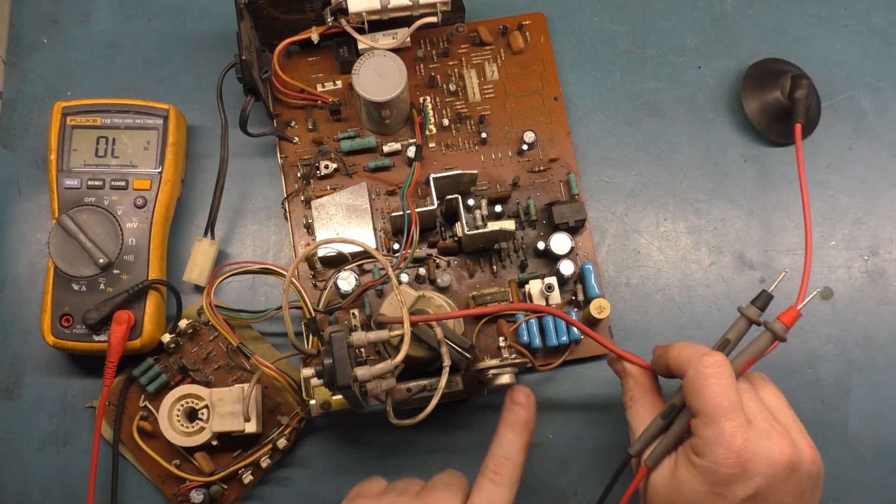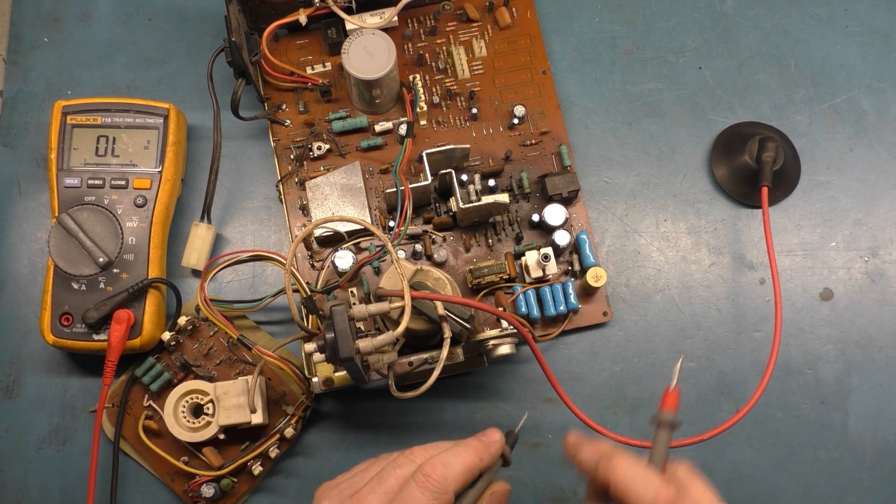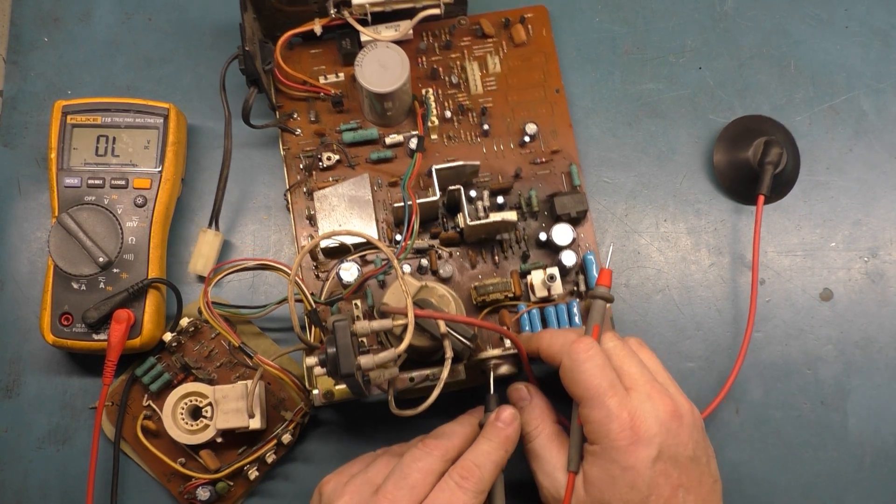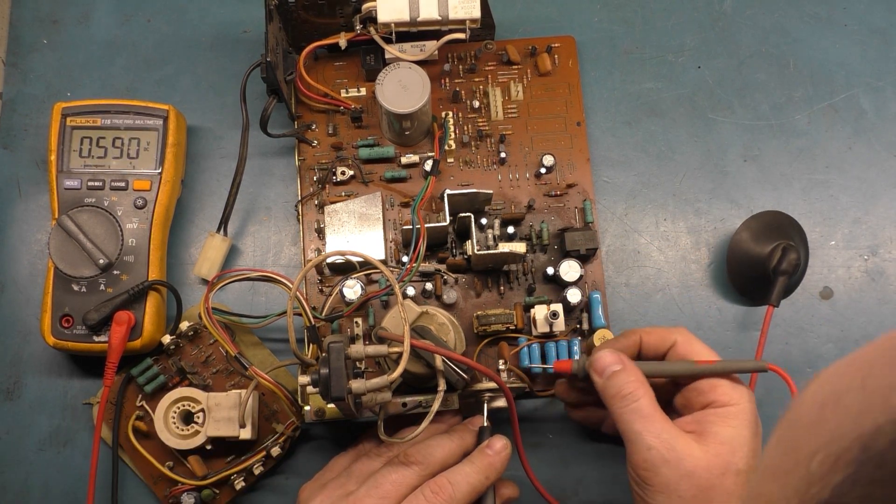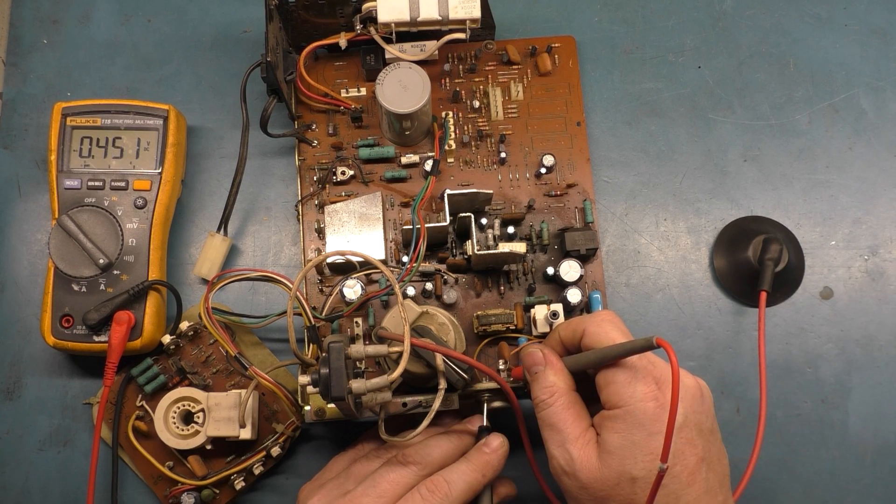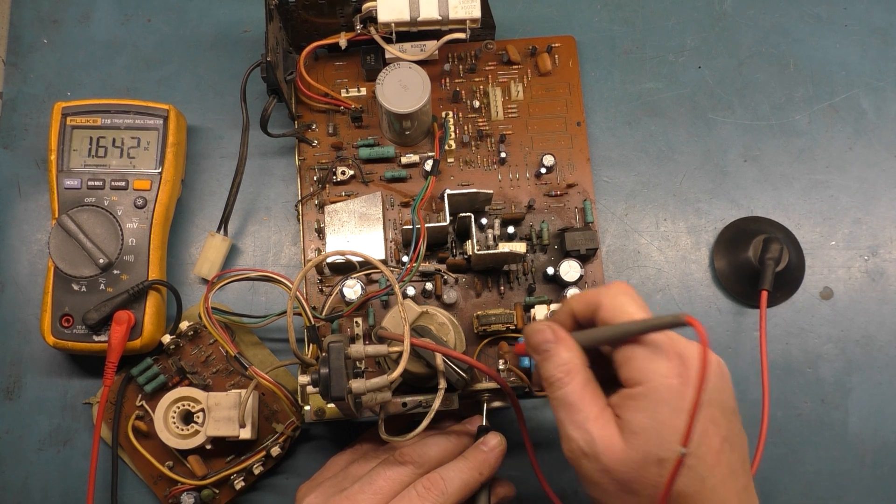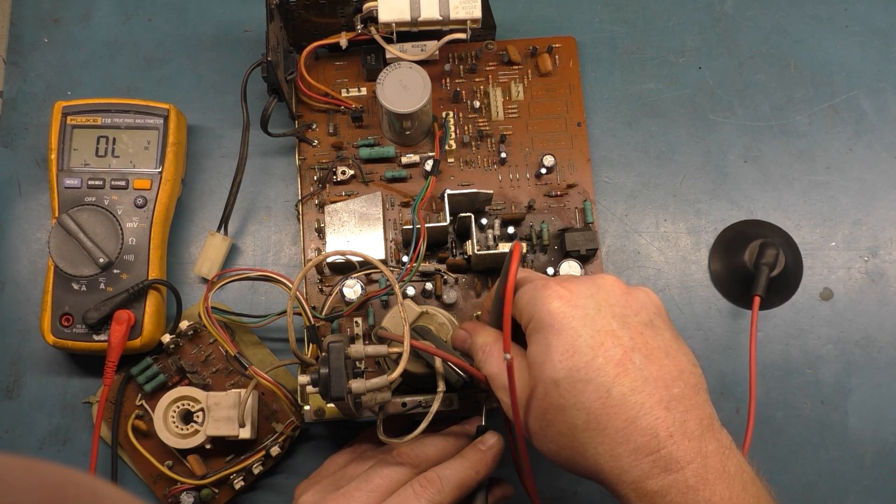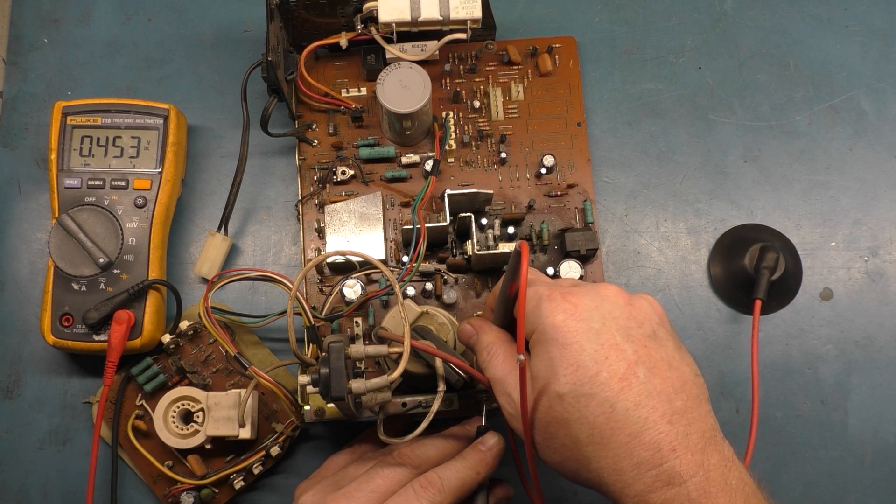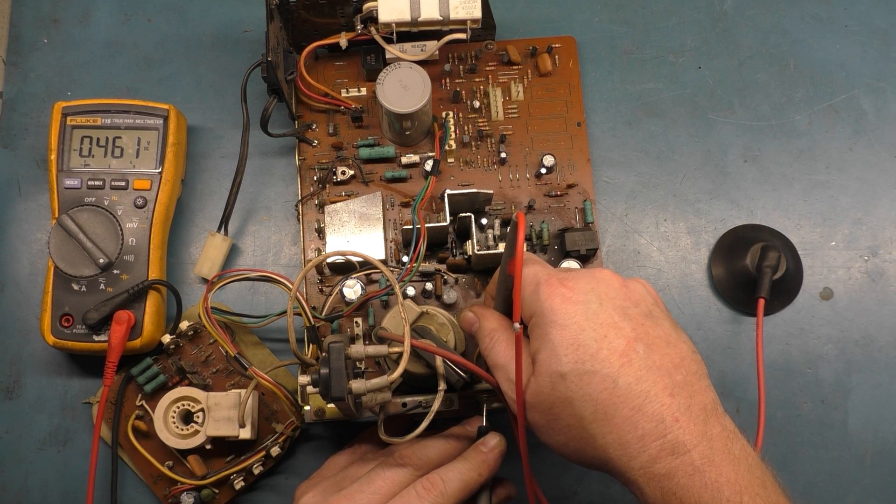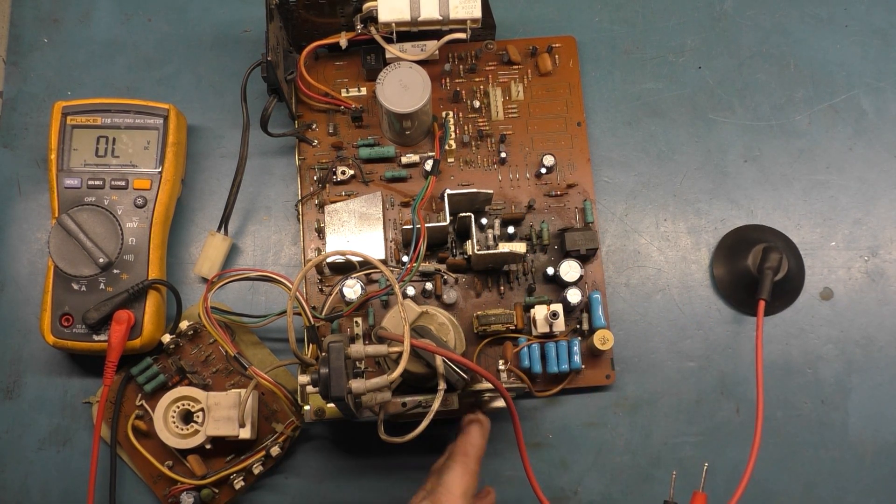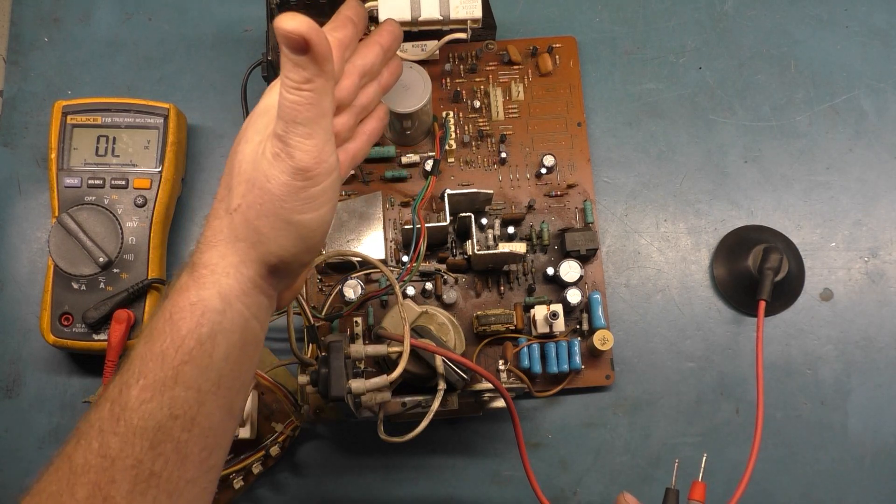Let's check our horizontal output transistor, this guy over here. Same story, we should put the negative in the screw head and each leg should be about 0.45 voltage drop. Let's go to this leg, 0.461. And then we'll go to this other one. 0.461. So HOT should be good. Voltage regulator should be good. B plus resistor should be good.